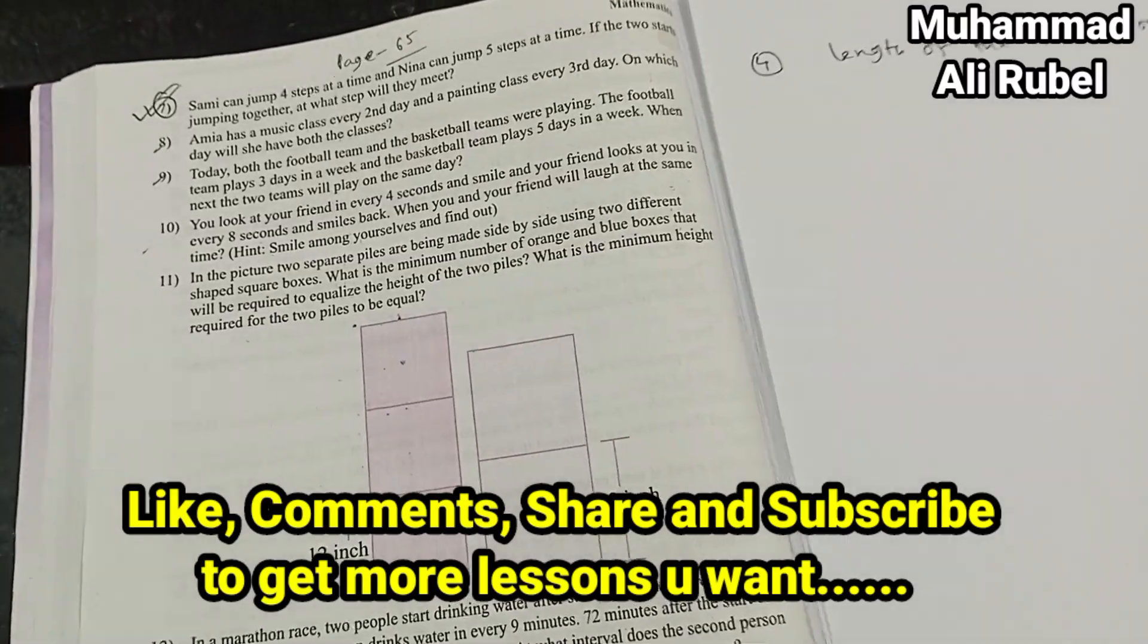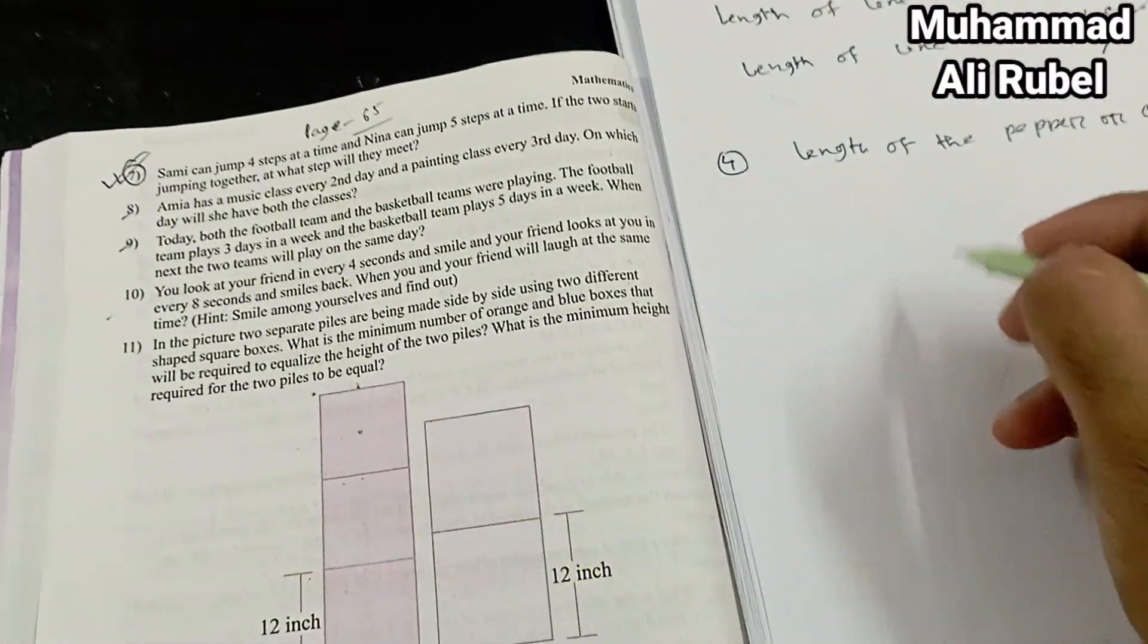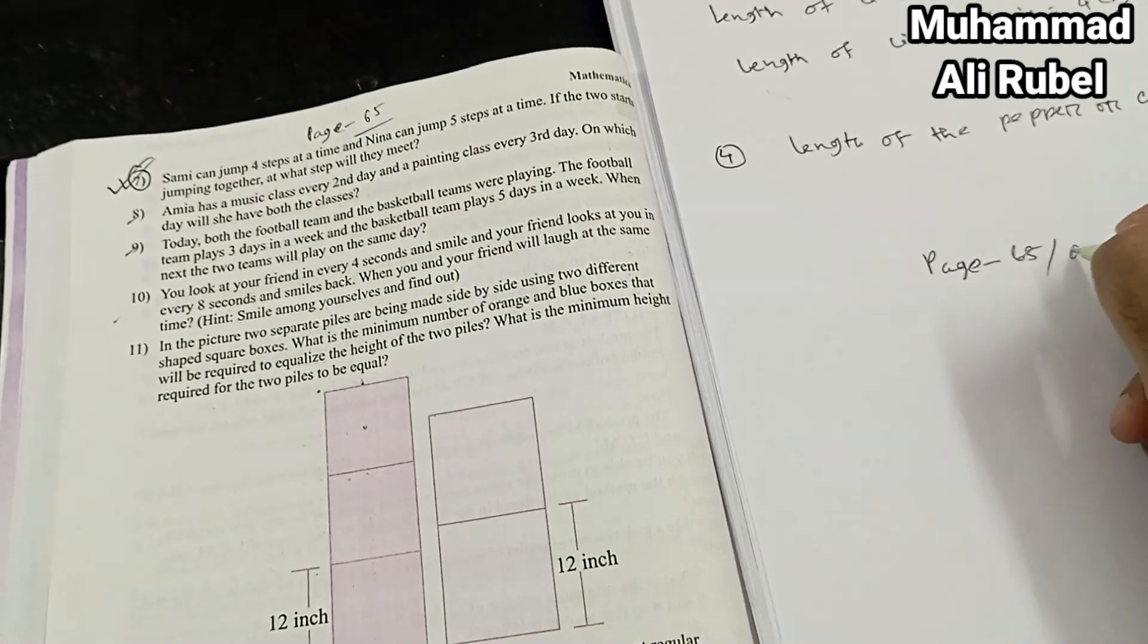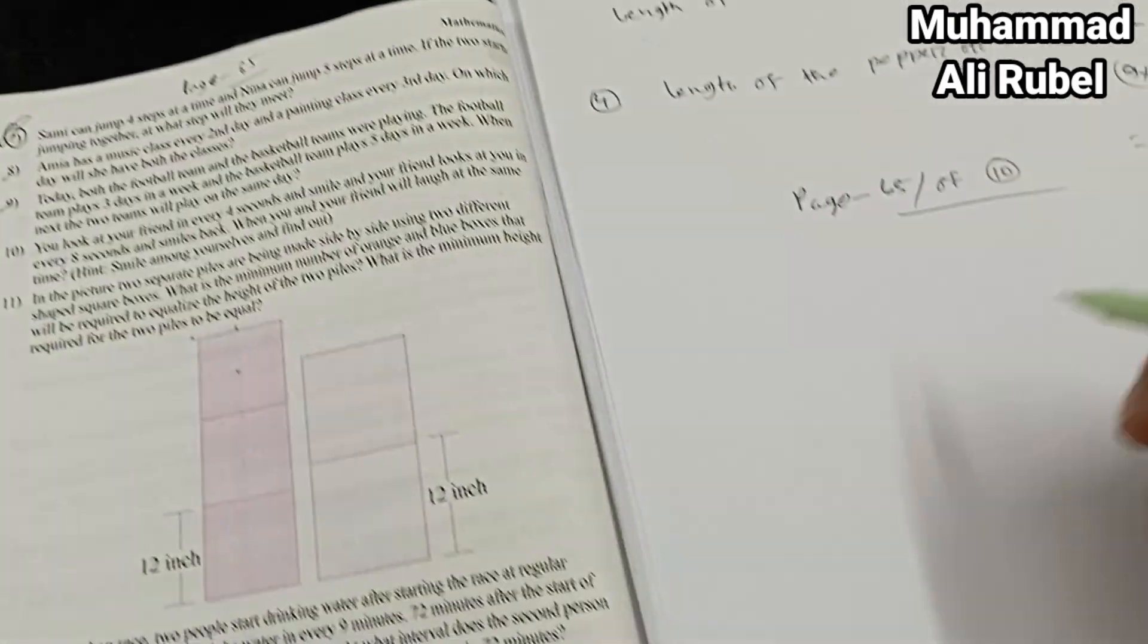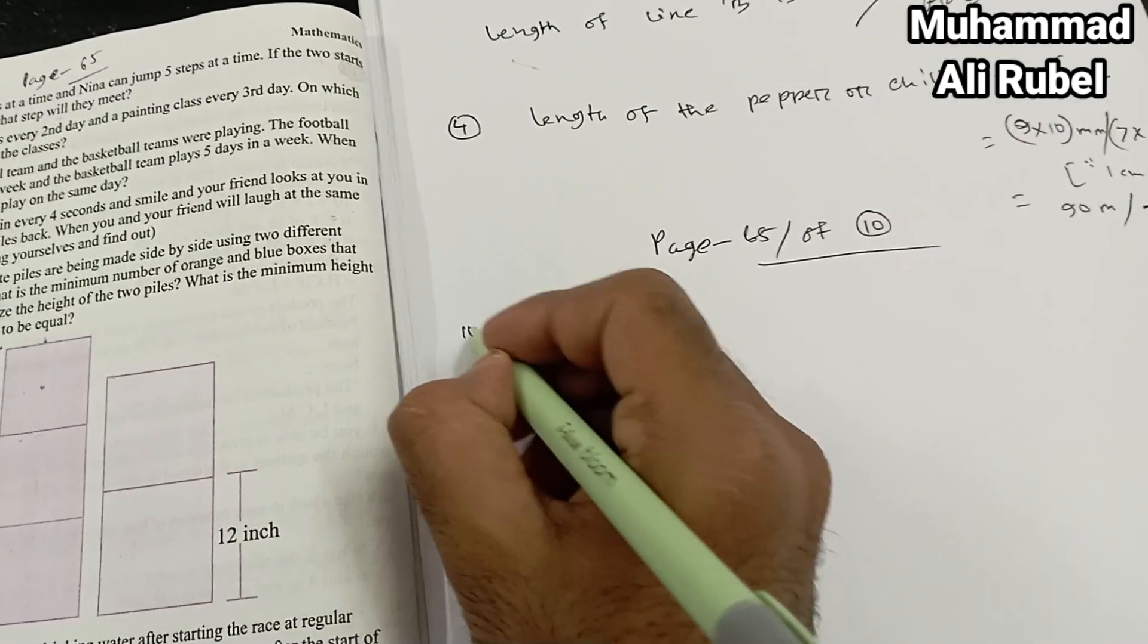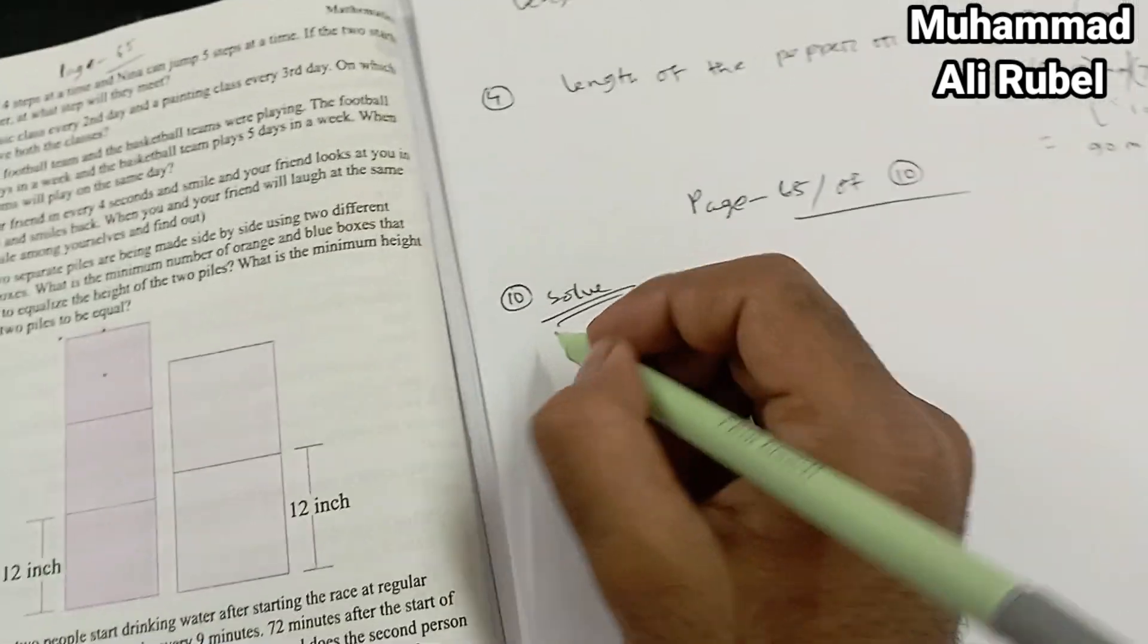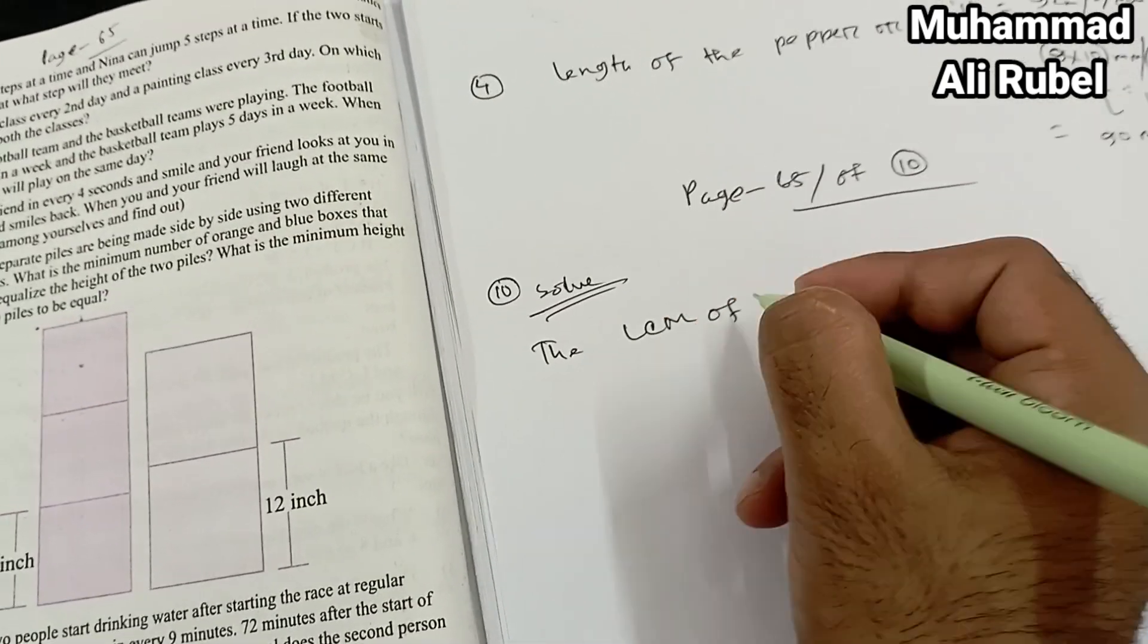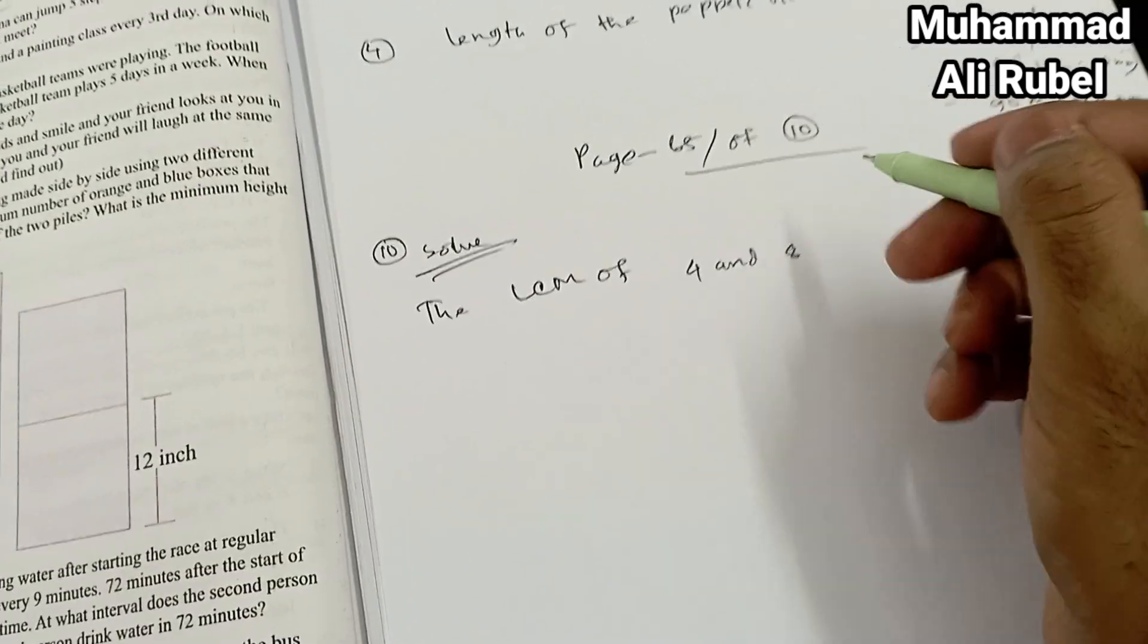Now I'm gonna solve it, page 65 number 10. Solve the LCM of four and eight.